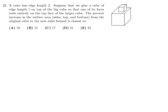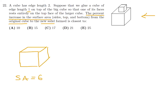A cube has edge length two. Suppose we glue a cube of edge length one on top of the big cube so that one of its faces rests entirely on top of the face of the larger cube. The percent increase in surface area from the original cube to the new solid formed is what? First, let's focus on the original cube. The surface area is six sides times the area of each face. Each face has length two, so area is two by two, giving four times six — surface area is 24.